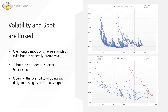We want to understand how spot and volatility are correlated — this will be the basis for using IVX as an intraday signal. Looking at the S&P implied vol IVX index against spot, we can see that there is a correlation, but it's pretty weak. We can't really say that over a long period of time there is a very strong relationship. Volatility tends to be slightly higher as spot goes down, but it's not a very strong relationship on a medium to long-term time frame.